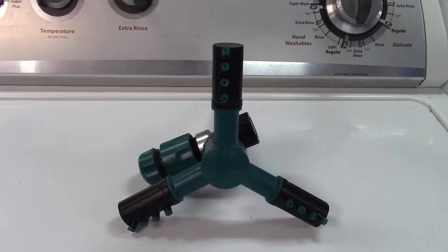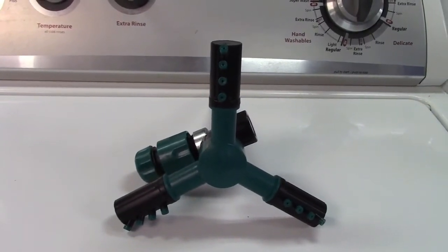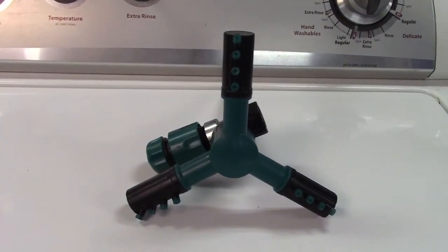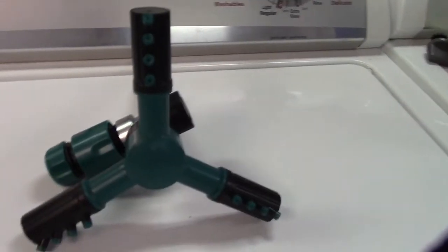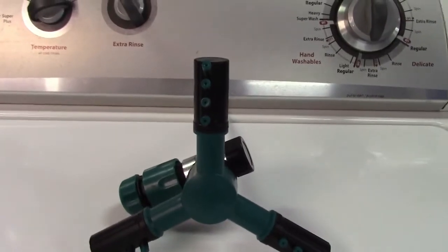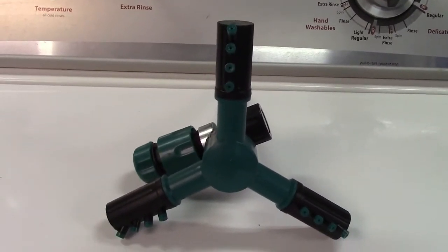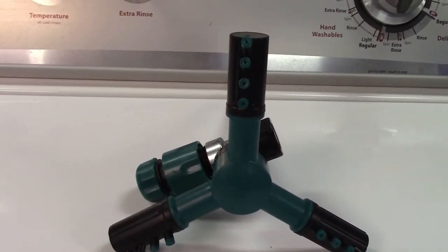So once again this was the TreatLife three arm adjustable lawn sprinkler that spins 360 degrees with a metal stake. If you'd be interested in purchasing this sprinkler I'll leave a link in the video description where you can find it available for sale on Amazon.